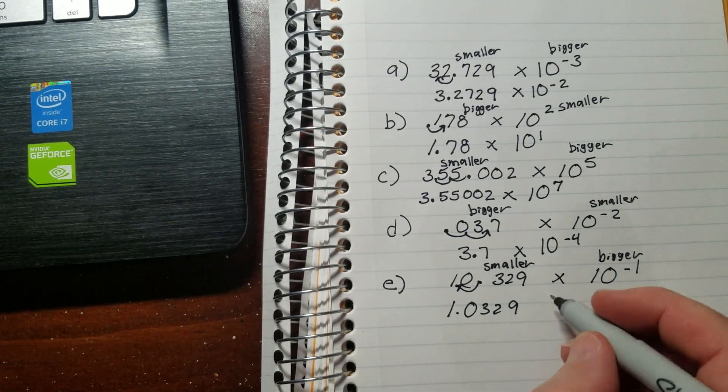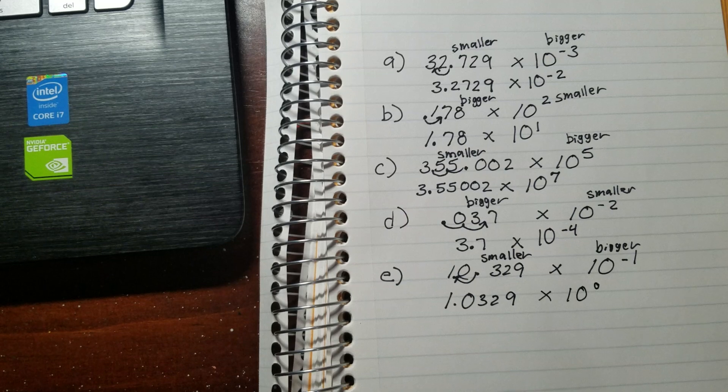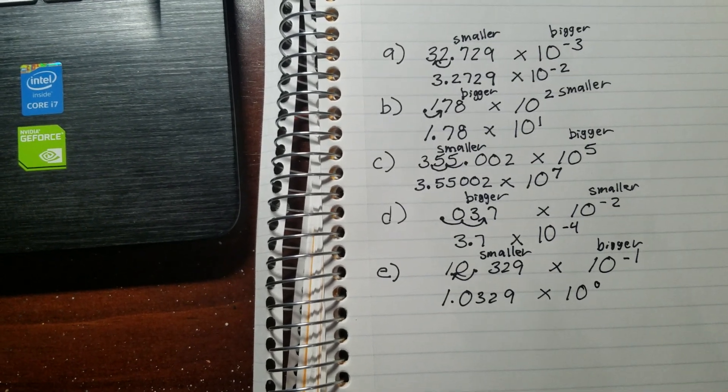So if I made that bigger, it'd actually be times 10 to the 0. And that's how you adjust numbers that are not quite in scientific notation.